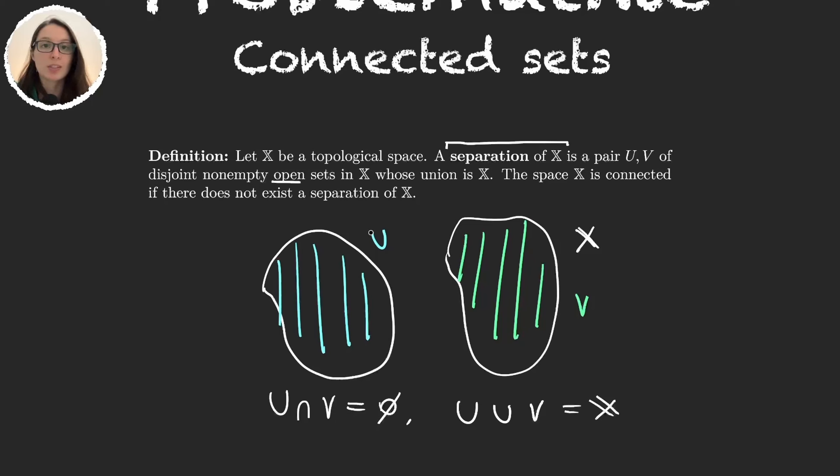And whenever a separation does not exist, and that is what I meant by saying that the definition was a negation, if there is no separation then we say that X is connected. This would be an example of a set that is not connected. So basically connected sets are those that consist of only one glob, not many like here.